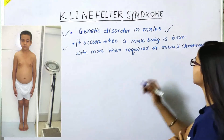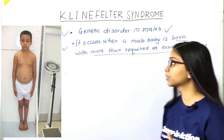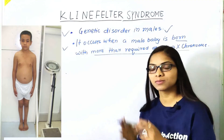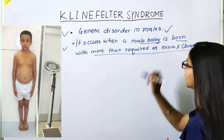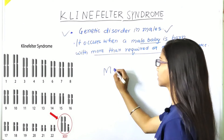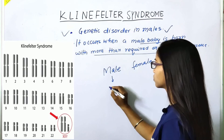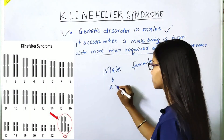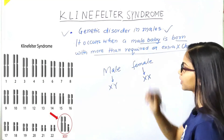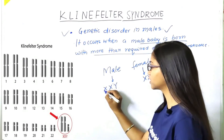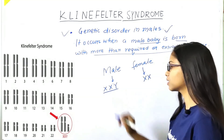It occurs when a male baby is born with more than the required or an extra X chromosome. As you know, a male's chromosome is XY and the female is XX. If you add an extra X to the male's XY, it will become XXY. That extra X chromosome causes the problem.